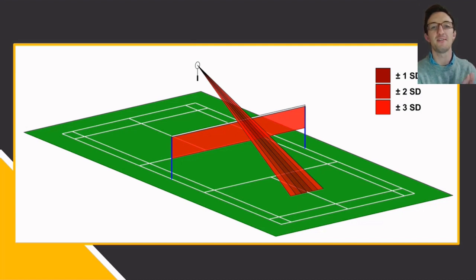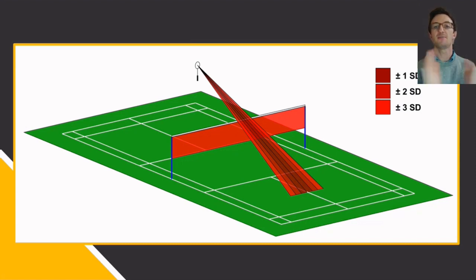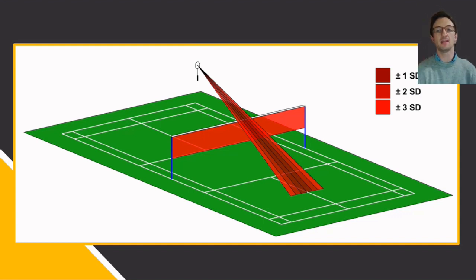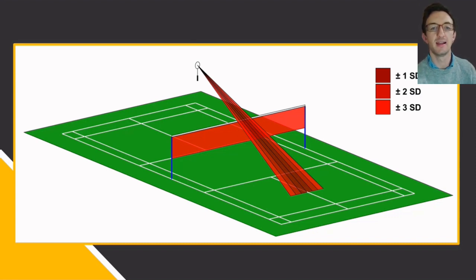By the time the shuttle has travelled half a court length, those one, two or three standard deviation differences in impact location would result in shuttlecock lateral deviations of 25, 50, or 75 centimetres. This shows the margin for error afforded to elite badminton players. We know where on the racket the best outcomes occur, but future research should attempt to understand what techniques lead to more accurate or consistent impact locations or afford greater margin for error.